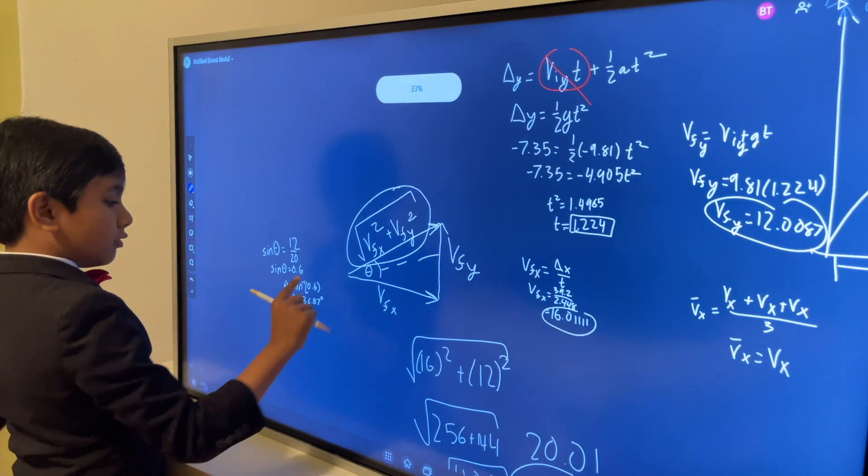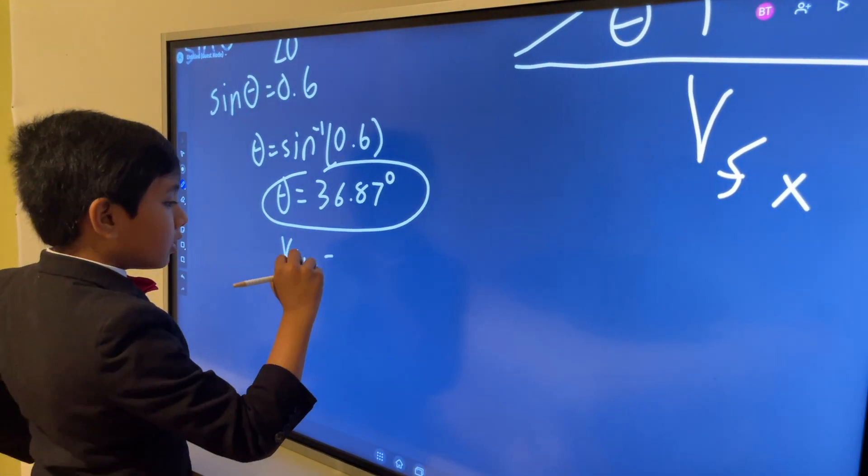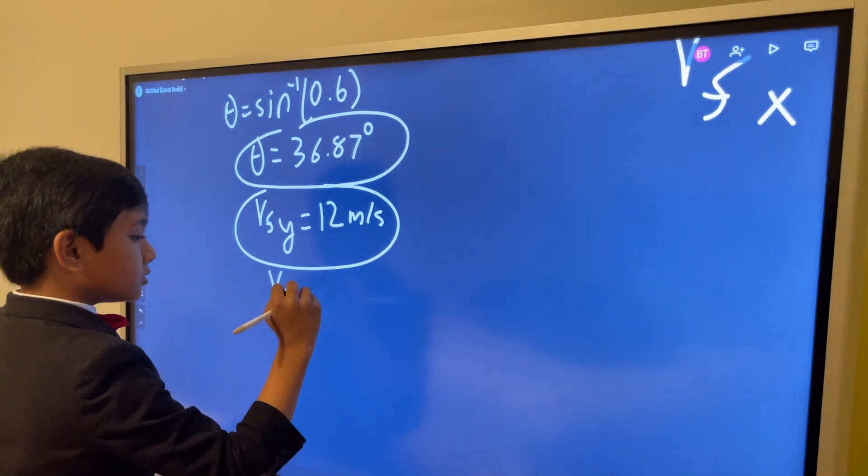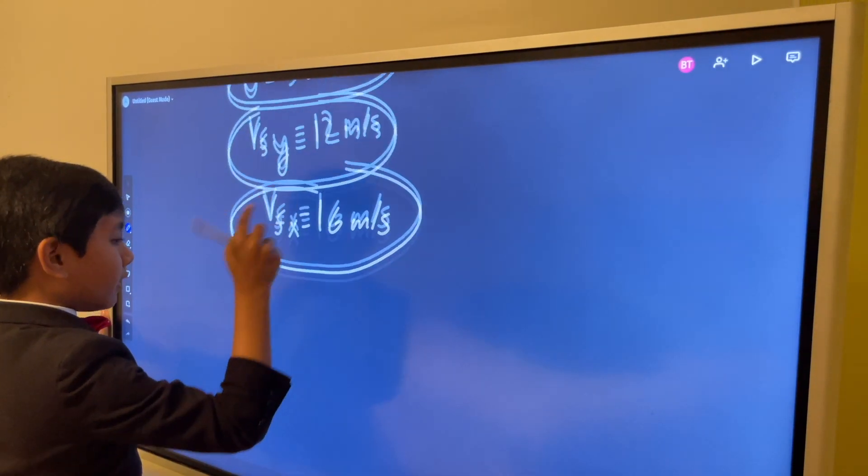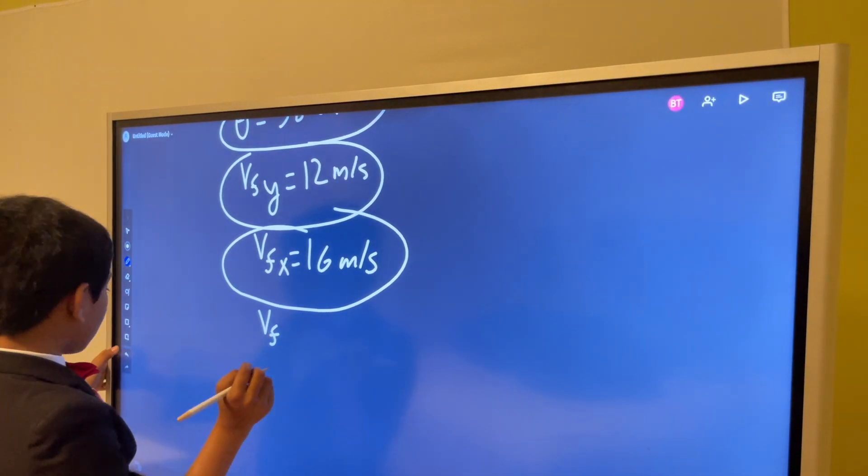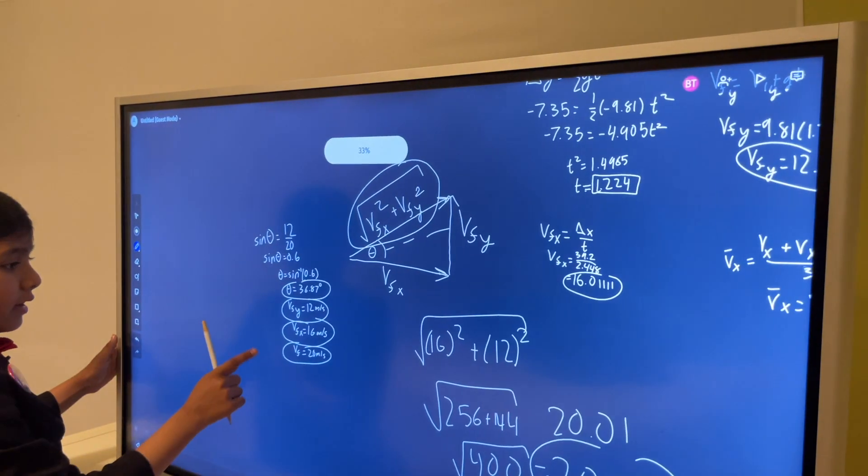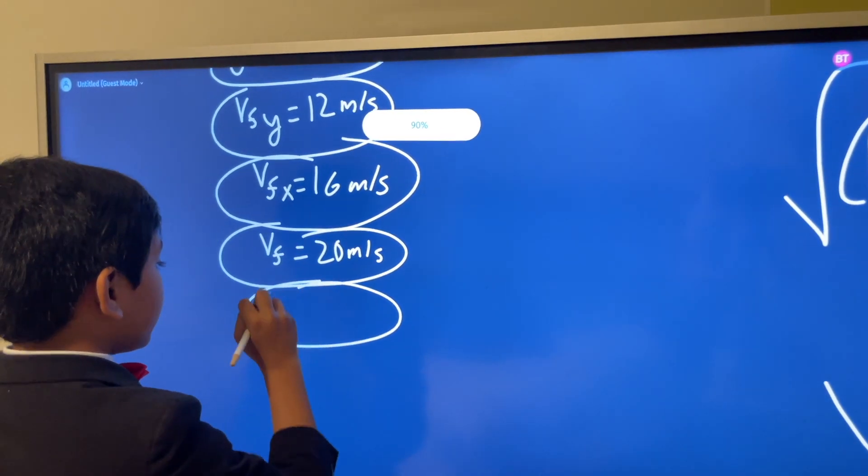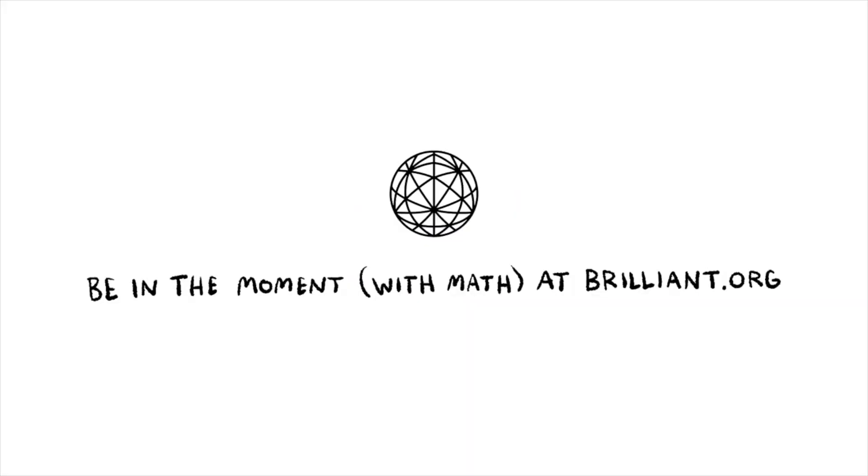And so, now, we have found theta. We have found VFY. We have found VFX. We have found V in total. We have found everything that you could possibly need. Oh, yeah. And we found the time. I'm probably the only 9-year-old mayor who's doing physics. Brought to you by Brilliant.org. Bari Science Lab to fall in love with math and science.